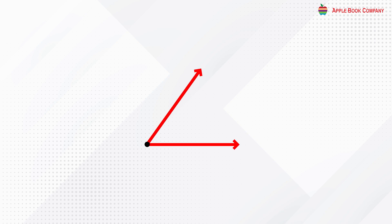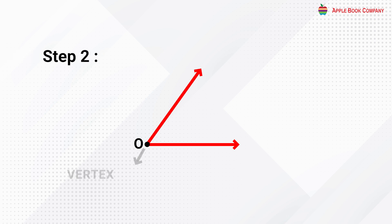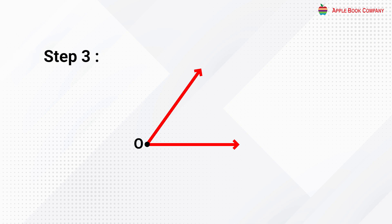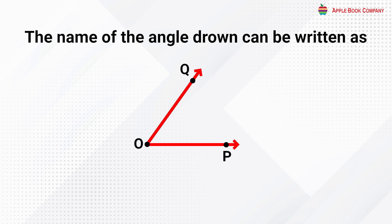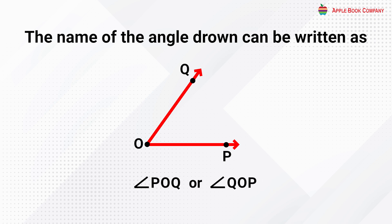Naming an angle: to name any angle, we name any point on one ray and follow these steps. Step 1: an angle is written using the angle symbol, written before the name of the angle. Step 2: the common point or vertex is written in the middle. Step 3: the other two points of the rays are written on either side of the common vertex. Therefore, the angle drawn can be written as angle POQ or angle QOP.